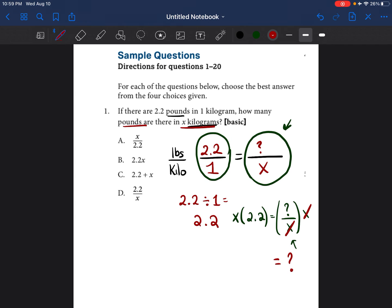Bring down the equal sign. And then on the left side, I have 2.2 times X, which is 2.2X. So we just found out that the missing value for that question mark is 2.2X. And remember, that question mark was representing how many pounds would be in X kilograms. So the answer would be B, 2.2X.